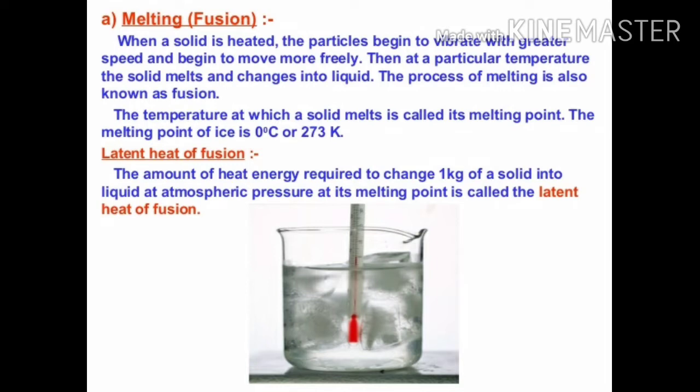The amount of heat energy required to convert 1 kg of solid into liquid at normal atmospheric pressure is related to the melting point. That means, 1 kg of solid needs a certain amount of heat at normal atmospheric pressure to convert into liquid. Like our normal atmospheric pressure is 1 atm. The heat required for this process is called the latent heat of fusion.